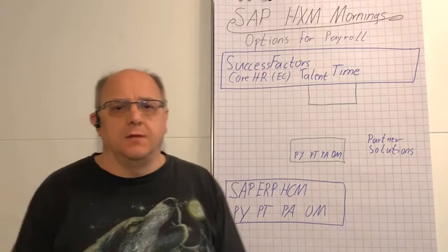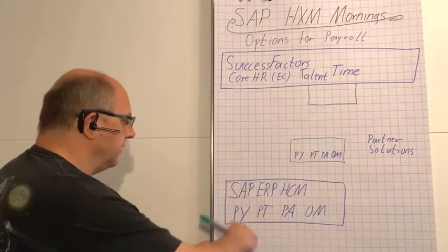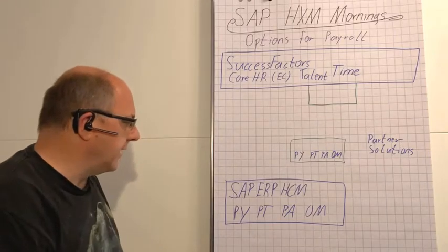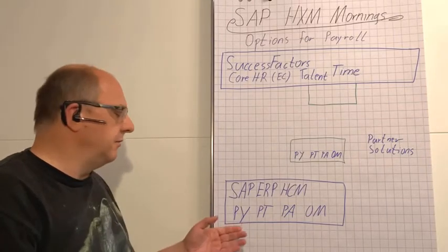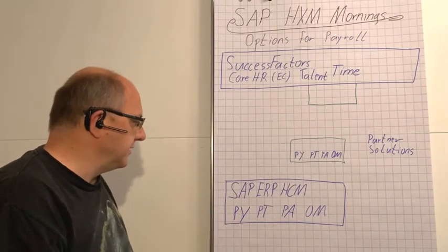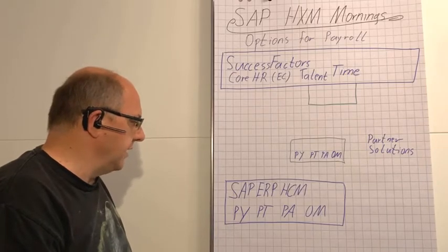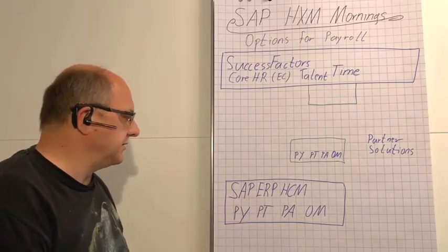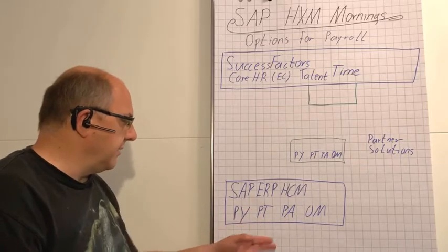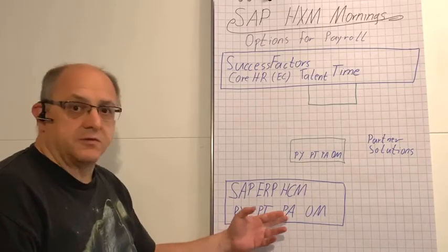Let's start here in the bottom left of my diagram where you see what traditional SAP on-premise customers would run: the SAP ERP HCM solution with your payroll, time attendance, personnel administration or core HR, and organizational management, maybe other modules.